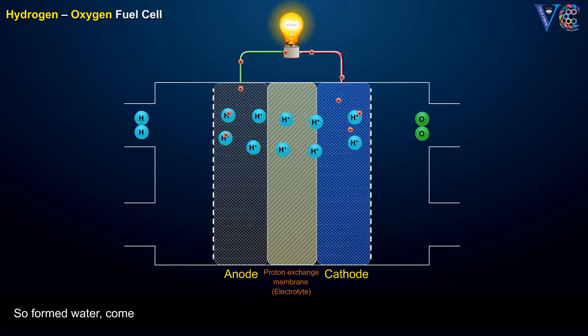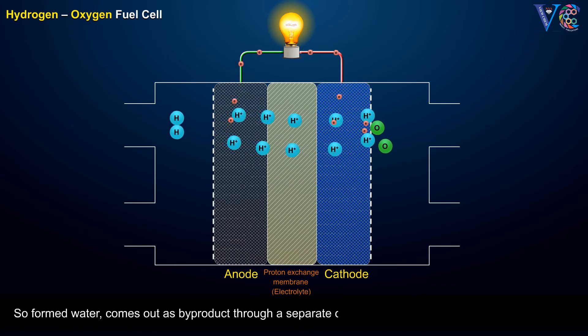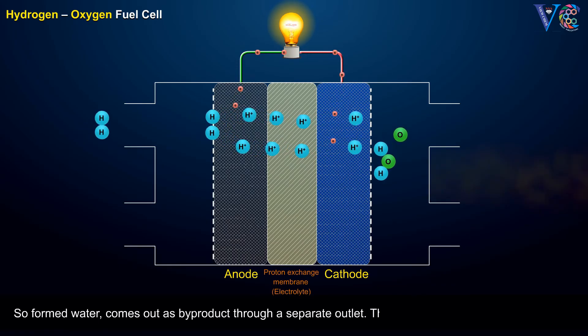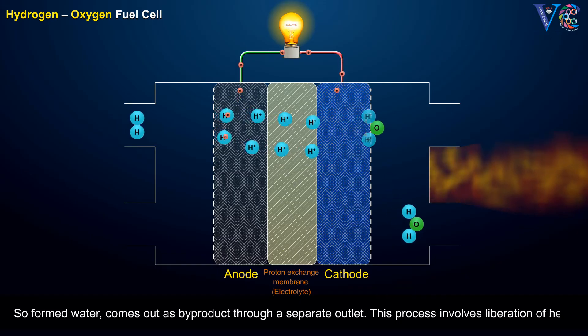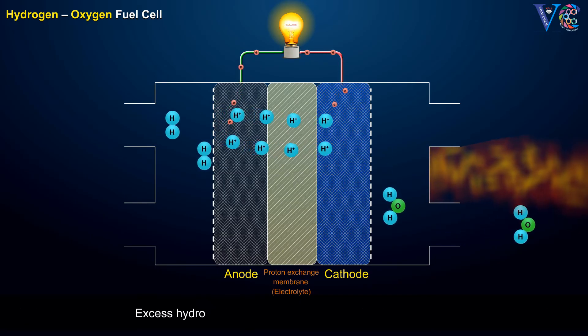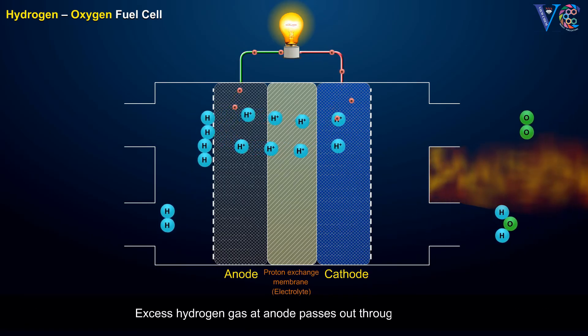The formed water comes out as a byproduct through a separate outlet. This process involves liberation of heat. Excess hydrogen gas at the anode passes out through an outlet.